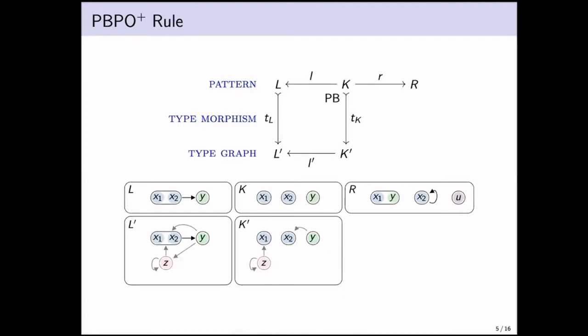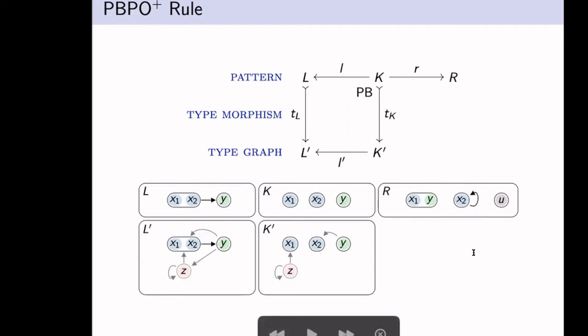Let's start with the notion of a PBPO+ rule. We have a span at the top, just like in DPO, LKR. The left-hand side L will be replaced by R, K is the interface. But now on the bottom, we also have two type graphs, L' and K'. The idea is that they describe sort of permissible environments around these patterns. If you look at L', the grayed-out parts are the ones that are not in the image of the type morphism TL.